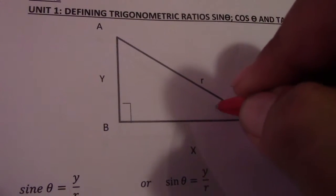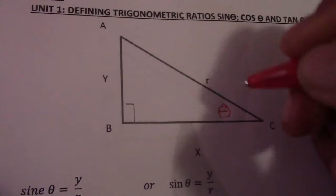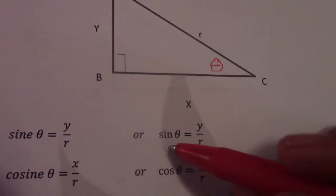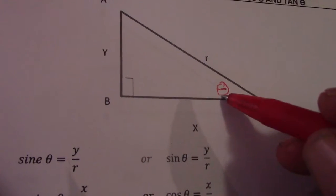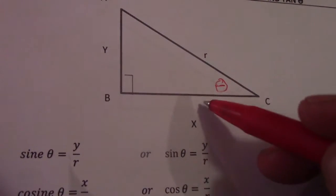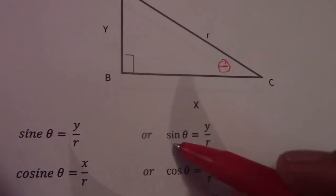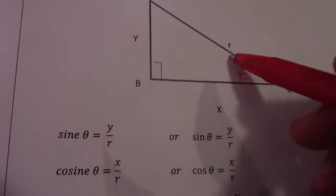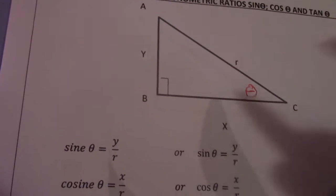So, sin theta—if I make that angle theta, then you work as a reference. If I say sin theta, that is Y over R. Cos theta would be X over R. And tan theta would be Y over X.